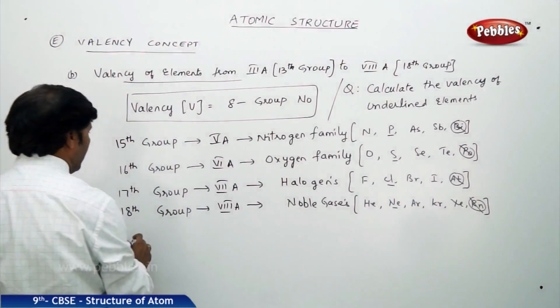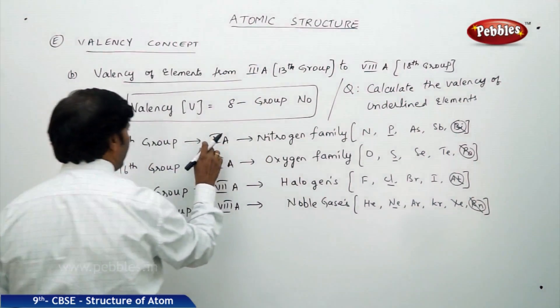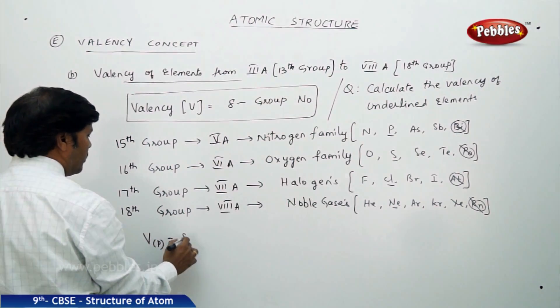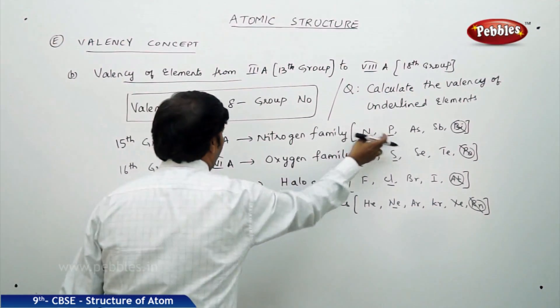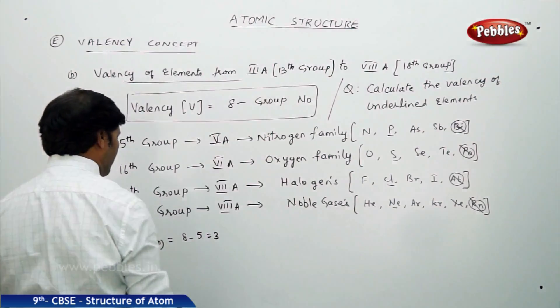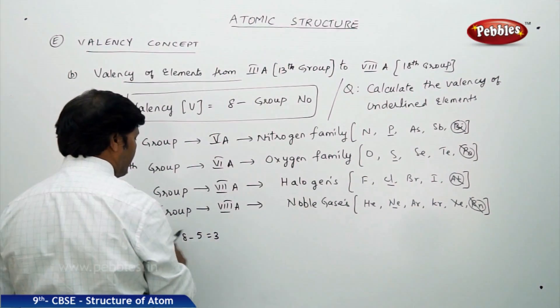So first one is phosphorus. You know that phosphorus belongs to 5A group. So valency of phosphorus V of P is equal to 8 minus 5 is equal to 3. Therefore, valency of phosphorus is 3.